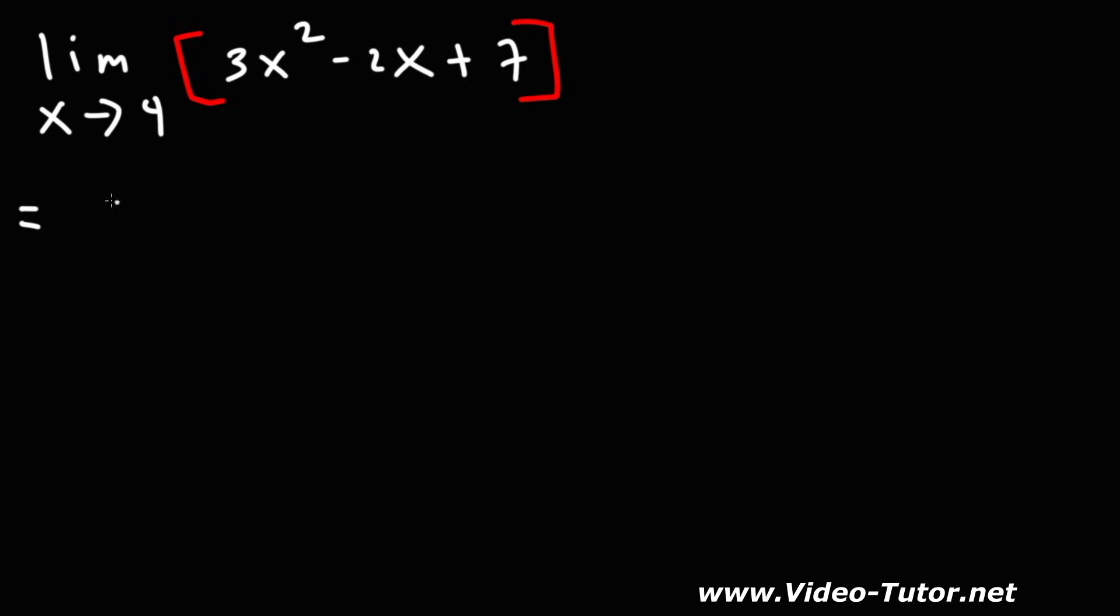So we're going to follow the same process. This is going to be 3 times the limit as x approaches 4 of x squared minus 2 times the limit as x approaches 4 of x, and then plus the limit as x approaches 4 for the constant 7.